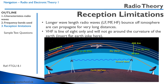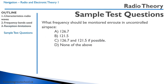VHF — which covers our VORs and COM radios — is line of sight only. It doesn't travel around the curvature of the Earth; it's affected by the Earth's surface and will not curve around it.